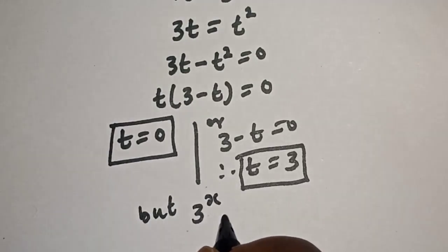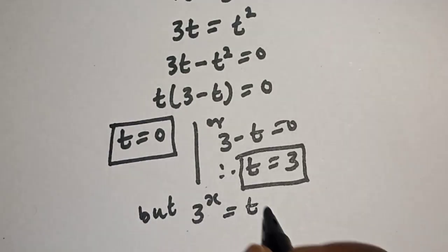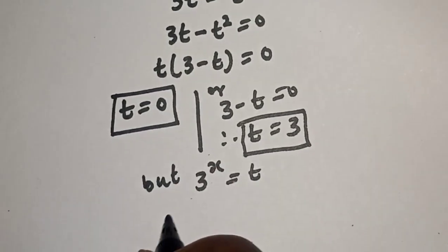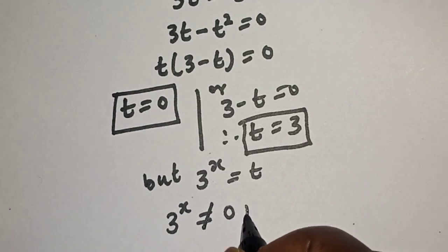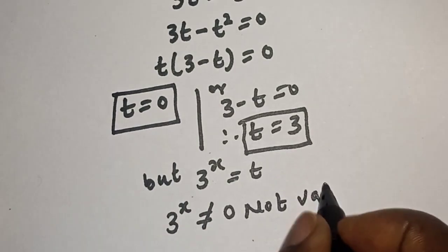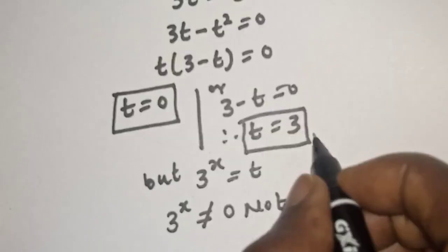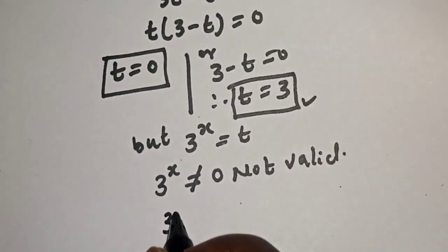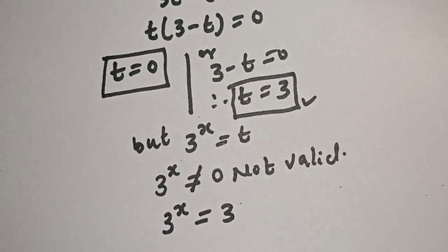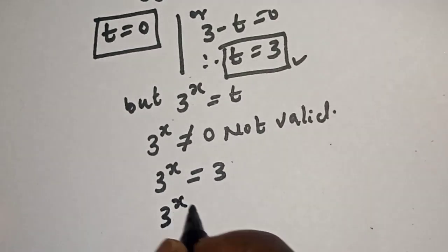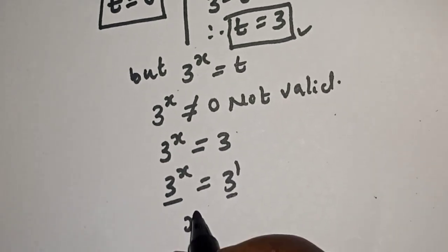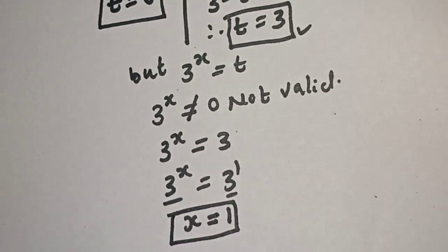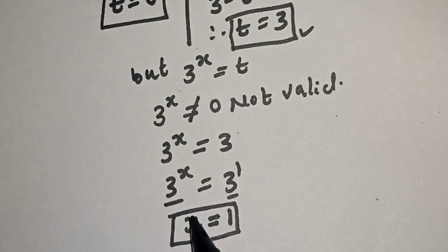Since 3 raised to power s equals t, for the first case t equals 0: 3 raised to power s cannot equal 0, so this is not valid. Working with the second case, 3 raised to power s is equal to 3, which is 3 raised to power 1. Since the bases are the same, s is equal to 1. This is the final answer.